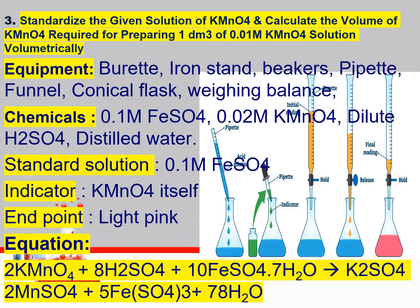Equipment required for this experiment: burette, iron stand, beakers, pipette, conical flask, weighing balance. Chemicals required: 0.1 molar FeSO4, 0.2 molar KMnO4, dilute hydrochloric acid, and distilled water. The standard solution will be 0.1 molar FeSO4.